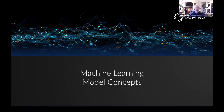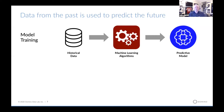At the most basic level, data from the past is used to predict the future — that's the fundamental concept behind machine learning and how models are built. You take historical data with a variety of different variables — data scientists call those features — and then you've got outcomes or results, which data scientists call targets. They'll take that data and feed it into a variety of different machine learning algorithms to create predictive models. There's feature engineering and tweaking of hyperparameters involved, but ultimately they create models they can validate against historical outcomes.